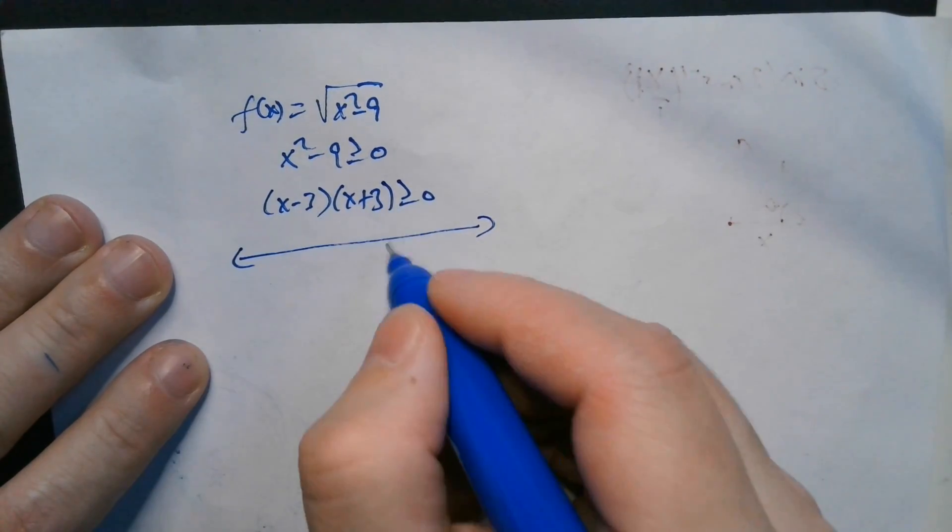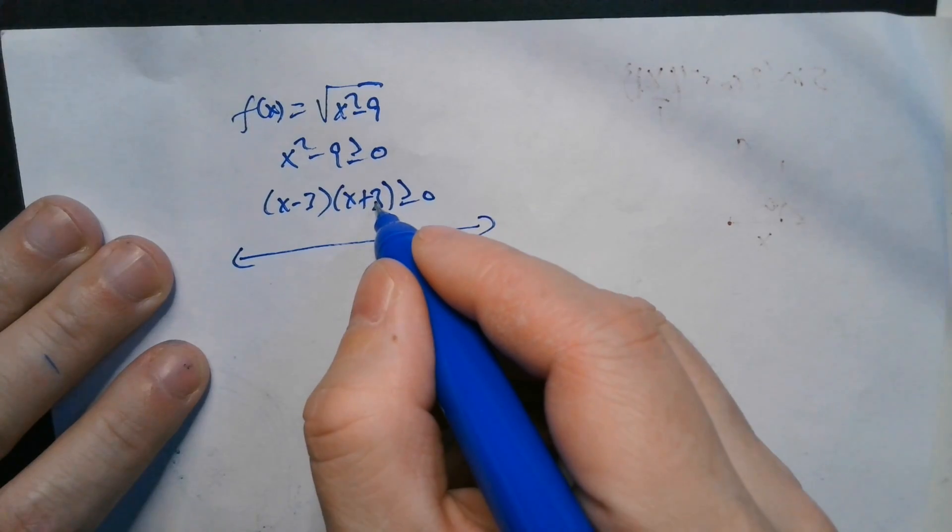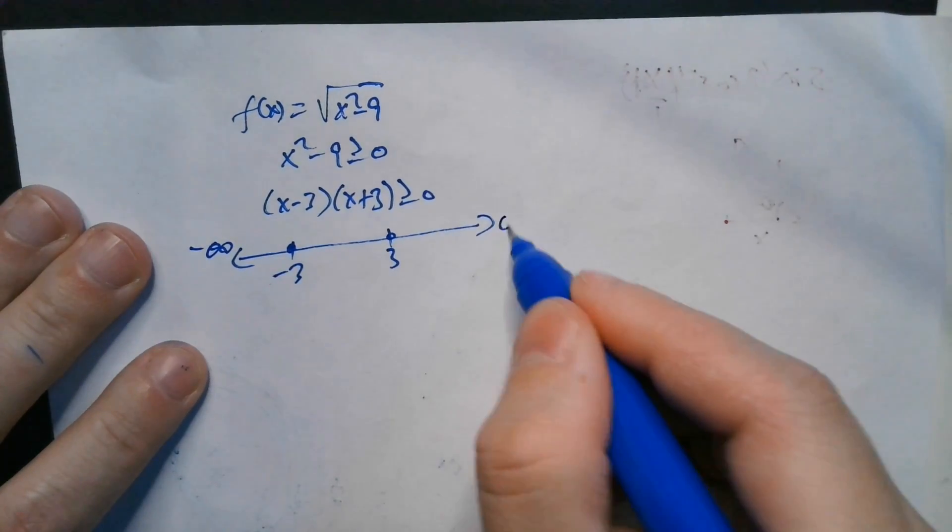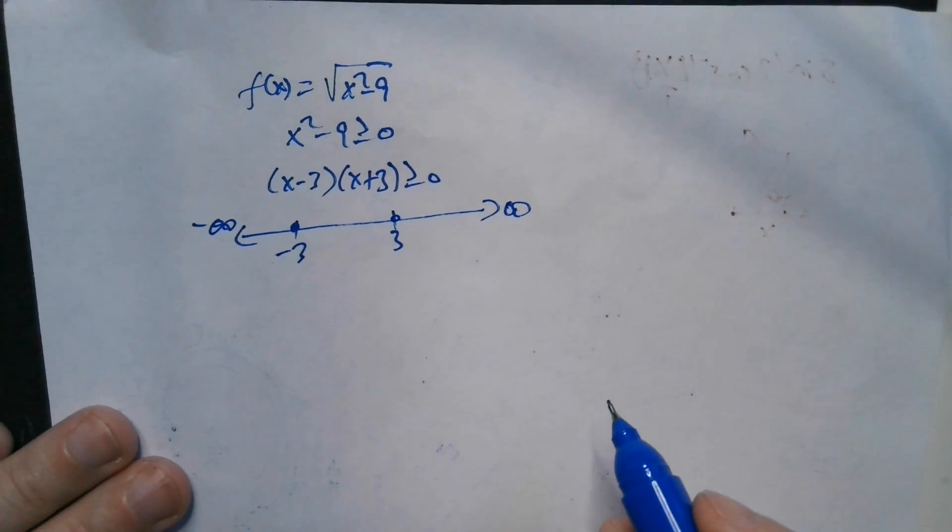Make a number line here. The opposite of negative 3, positive 3. The opposite of positive 3, negative 3. And then this is negative infinity. This here is positive infinity. You just have to check around these.